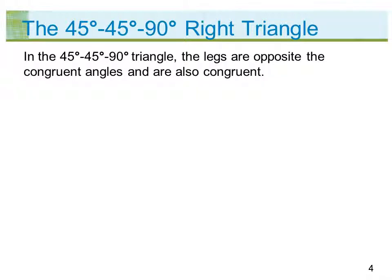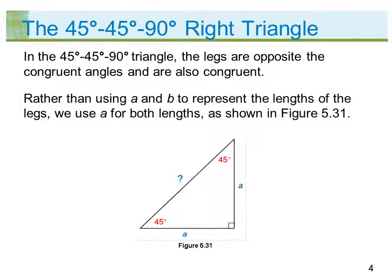In the 45-45-90 degree triangle, the legs are opposite the congruent angles and are also congruent. Rather than using a and b to represent the lengths of the legs, we use a for both lengths, as shown in figure 5.31.